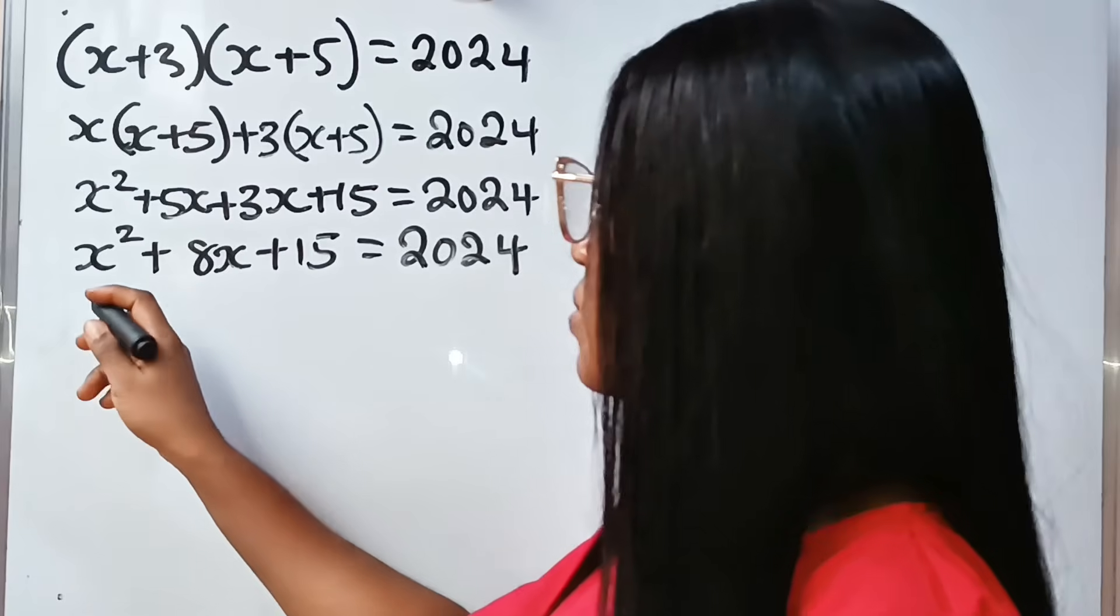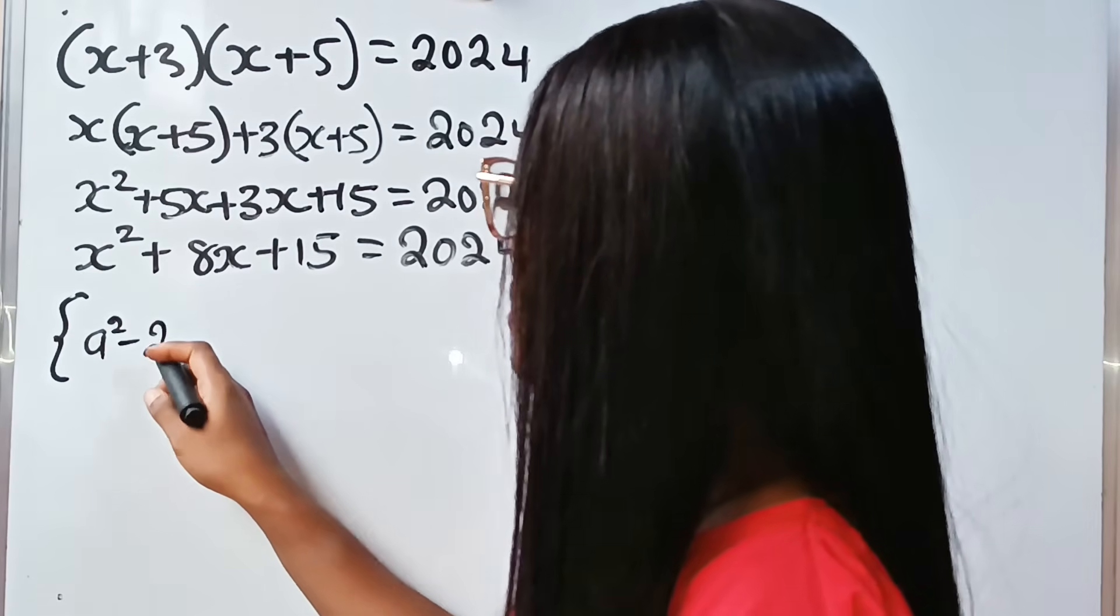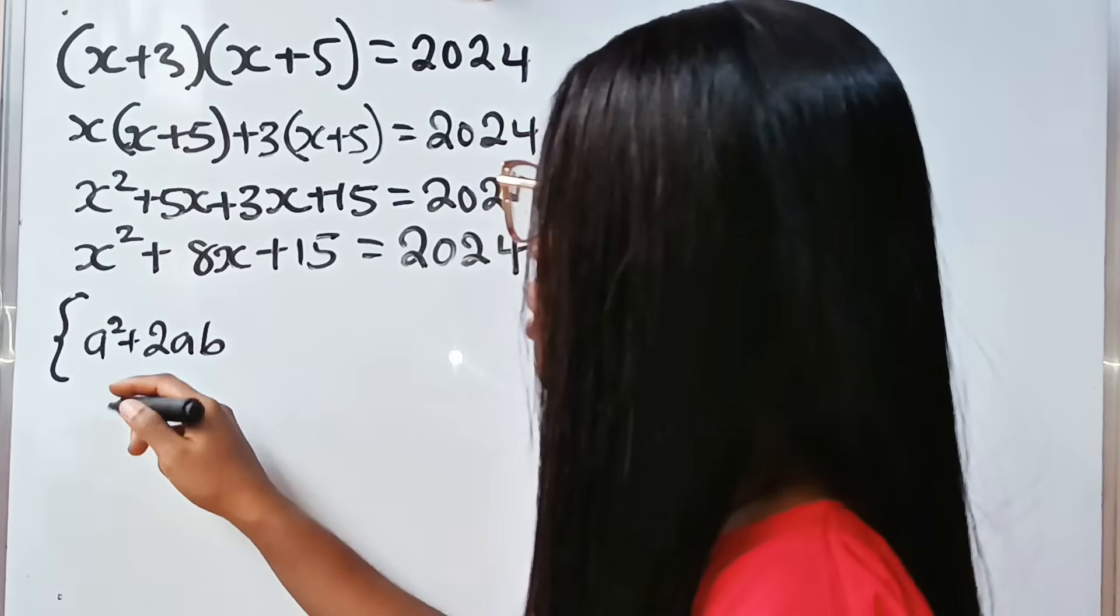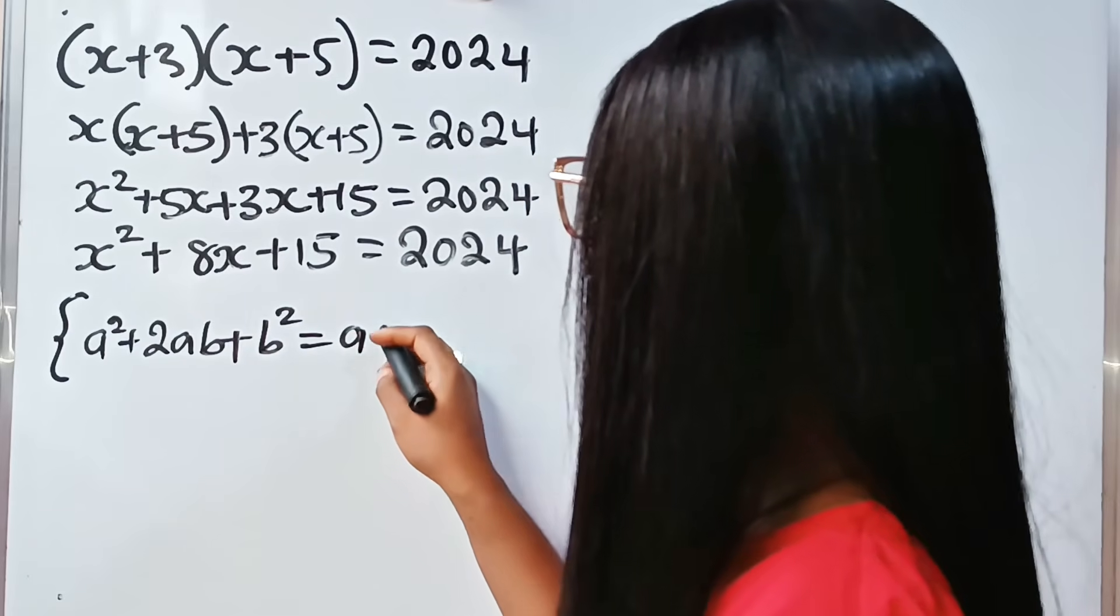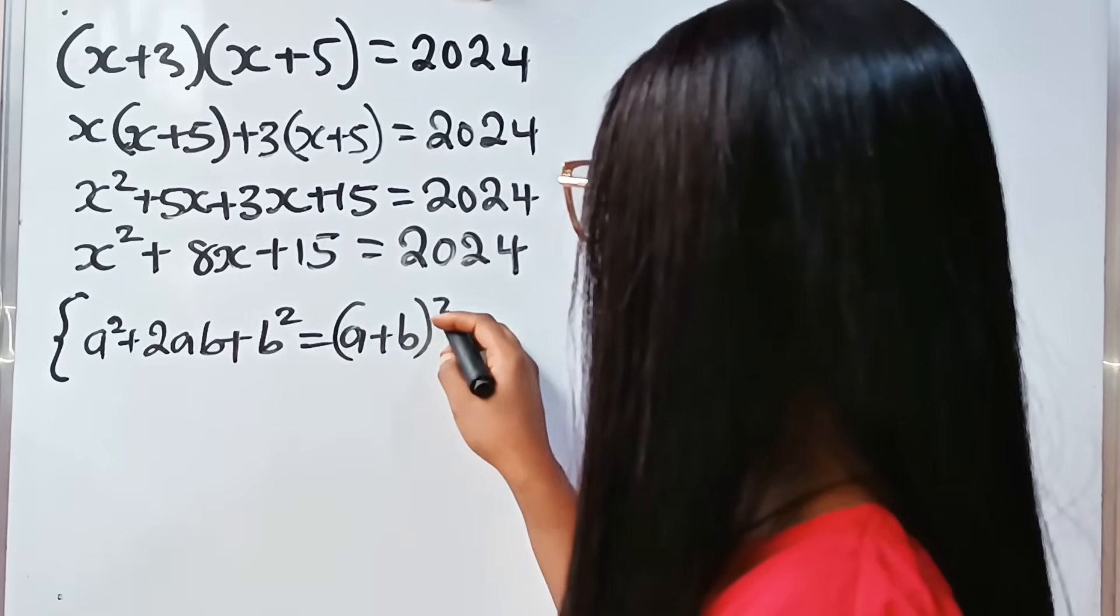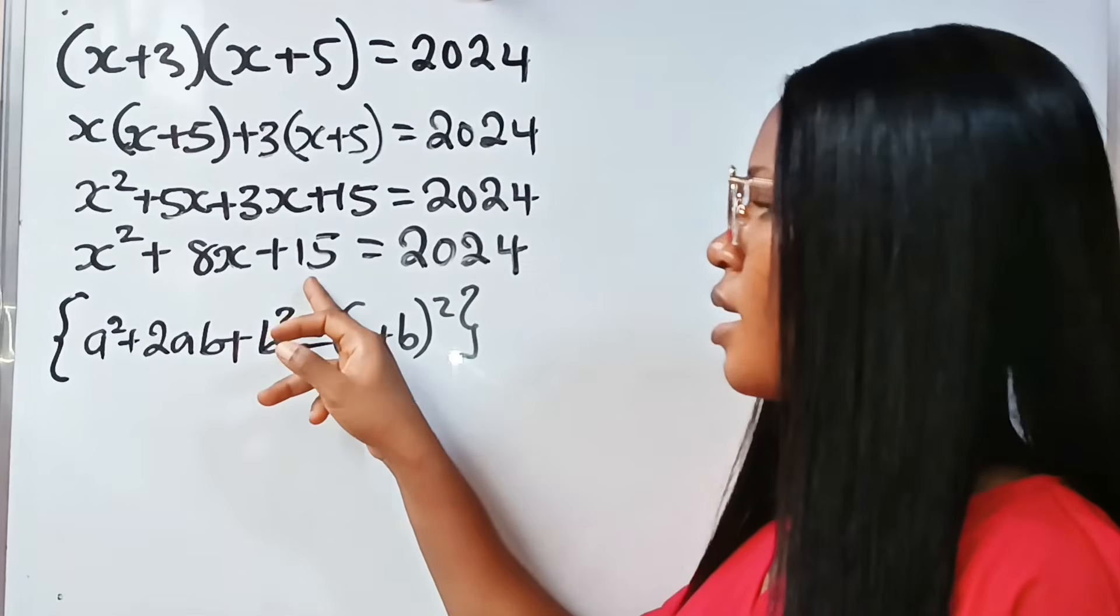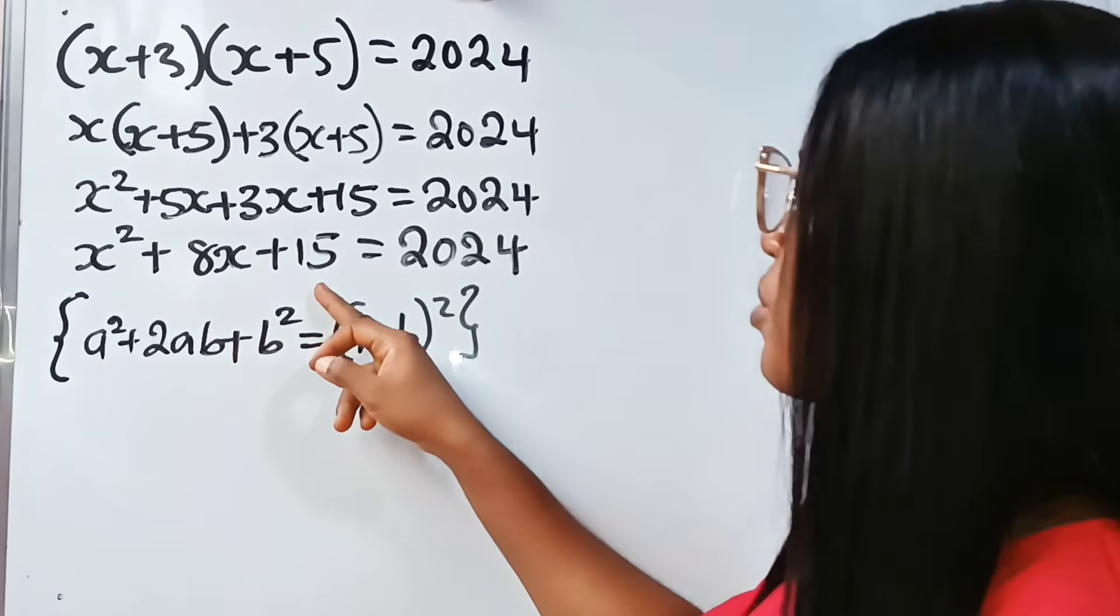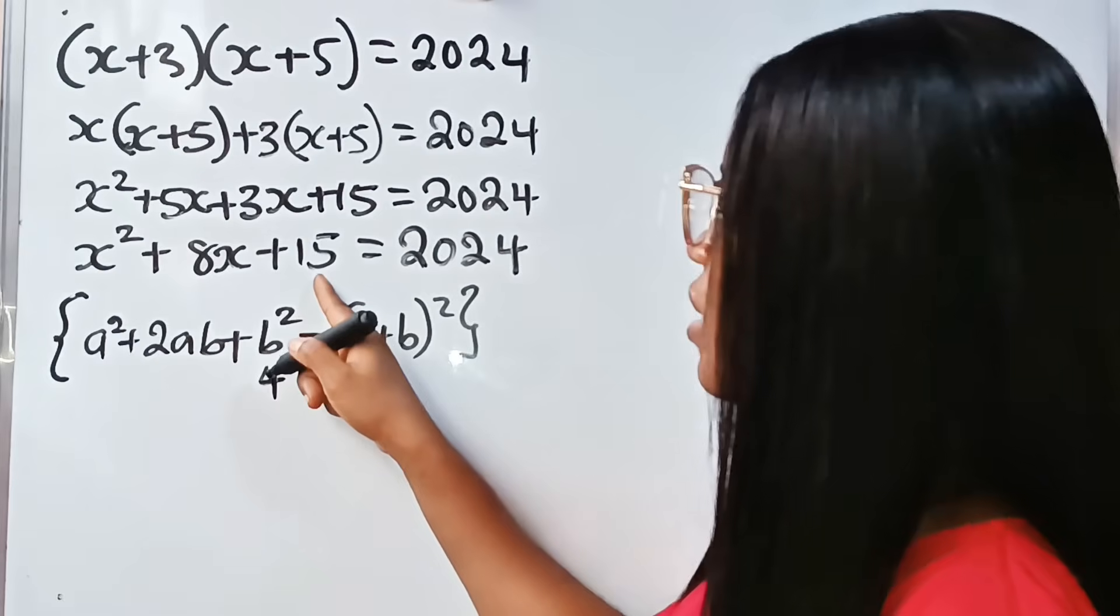This looks like a² + 2ab + b² = (a + b)². If I pick 16 here, that means my b is 4, because 4² gives 16.